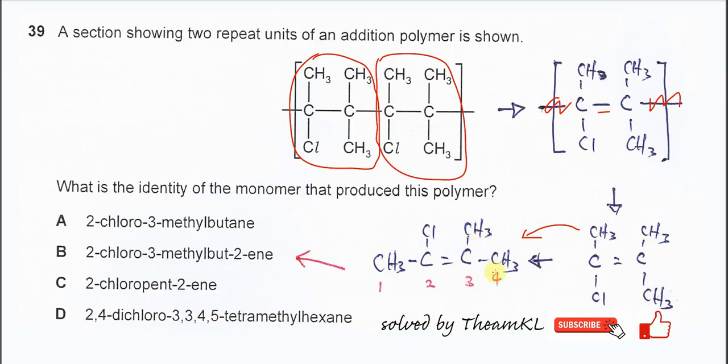The longest chain is four carbons and the C=C double bond - the alkene is at the second carbon. So we know it's but-2-ene, because the longest chain is four carbons and the C=C double bond is at the second carbon.